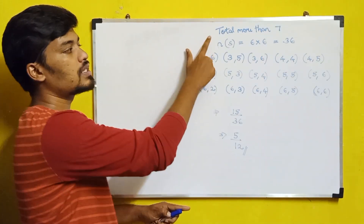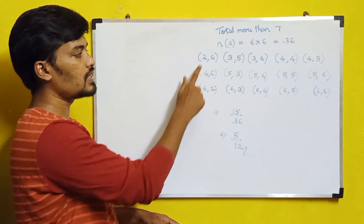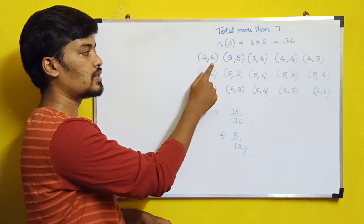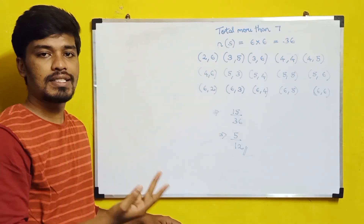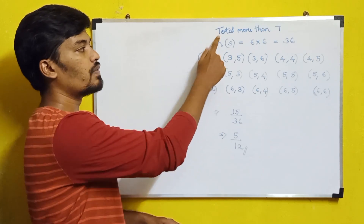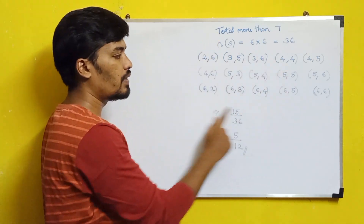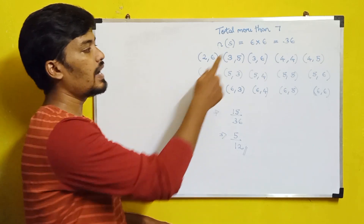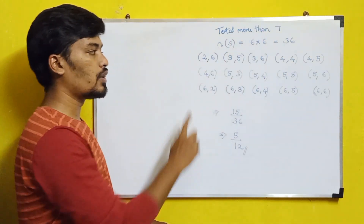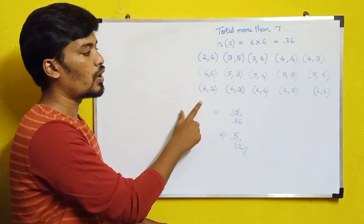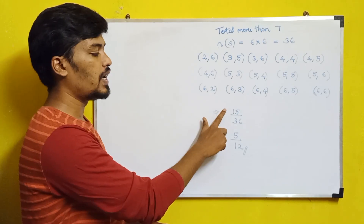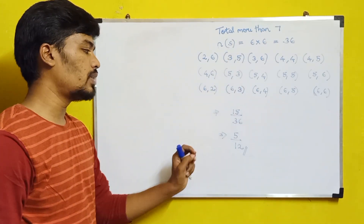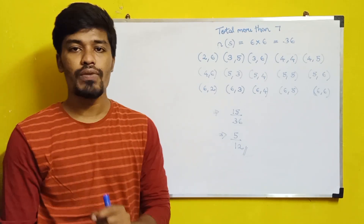We need to find the number of events where the total is more than 7. For example, (2, 6) gives 2 + 6 = 8, which is more than 7. Writing all possible combinations where the sum exceeds 7, the total number of favorable events is 15. So the probability is 15/36, which simplifies to 5/12.